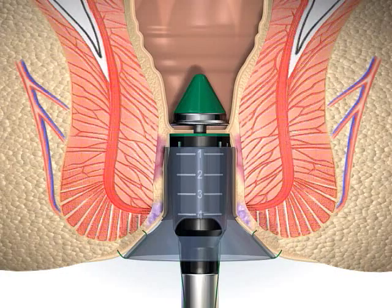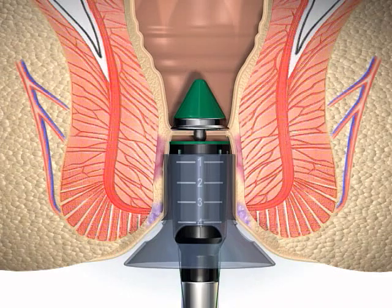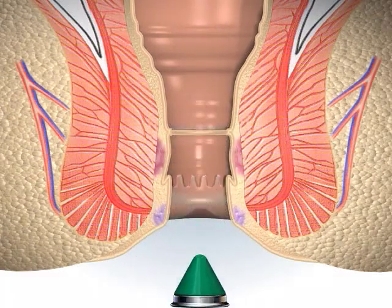Upon extraction, additional turns can cause interposition of mucosa between the anvil head.